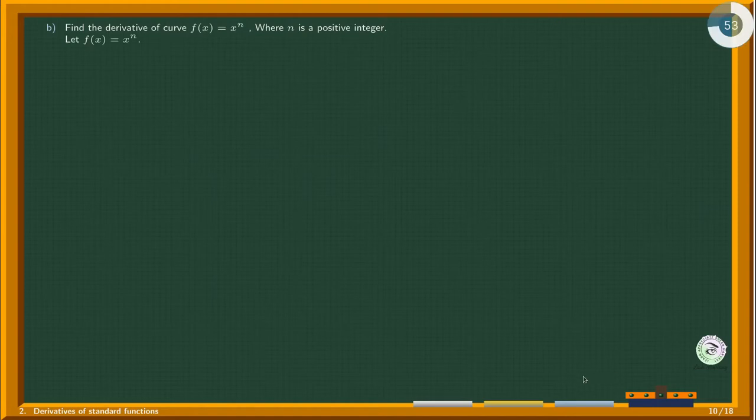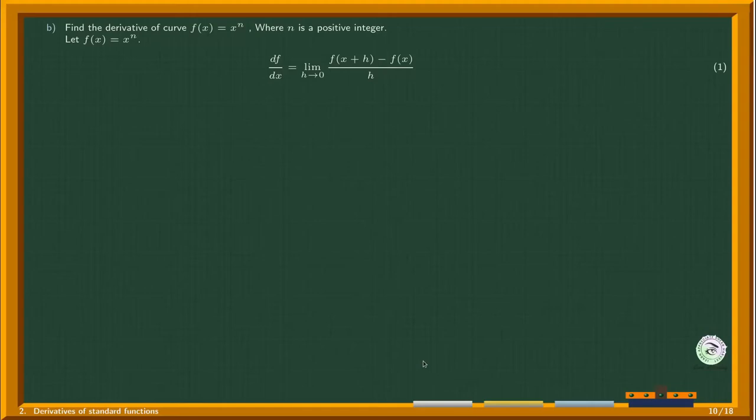Let f(x) equal x^n. From the definition of the derivative, we get equation 1. By plugging in x+h for x in x^n, we get equation 2.